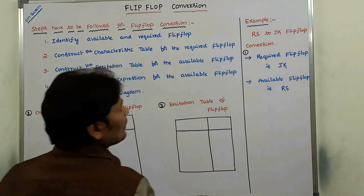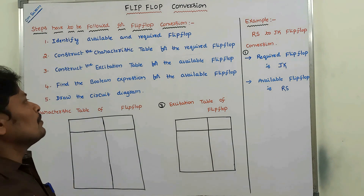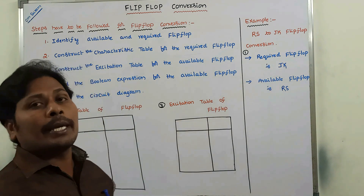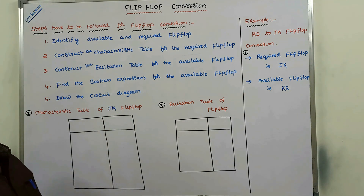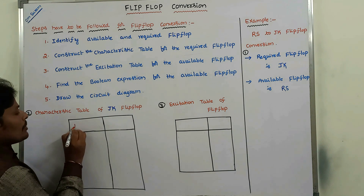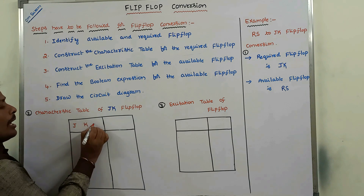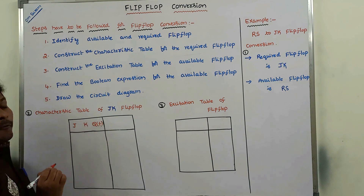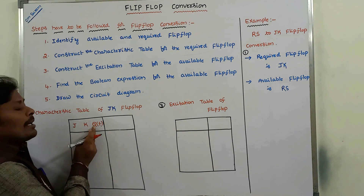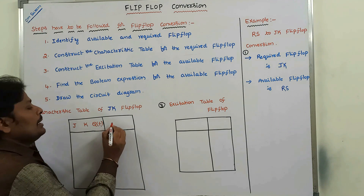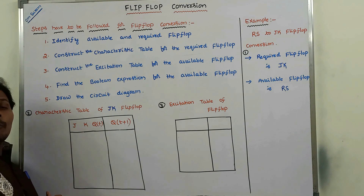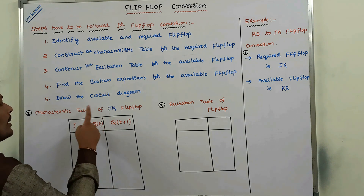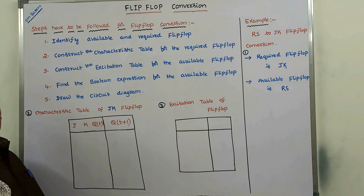The second step is construct the characteristic table for the required flip-flop. Here the required flip-flop is JK flip-flop, so we have to construct the characteristic table for JK flip-flop. In the characteristic table of JK flip-flop, we take three inputs: J, K, and Q(t). Q(t) is the previous output, also called the present state. The output is Q(t+1), also called the next state.